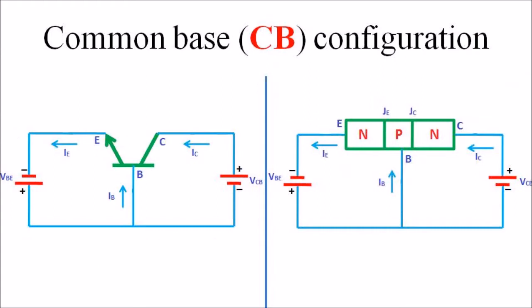The supply voltage between the base and the emitter is denoted as VBE, while the supply voltage between the collector and the base is denoted as VCB. As mentioned earlier, in every configuration, the base-emitter junction JE is always forward biased and the collector-base junction JC is always reverse biased. Therefore, in common base configuration, the base-emitter junction JE is forward biased and the collector-base junction JC is in reverse biased condition.